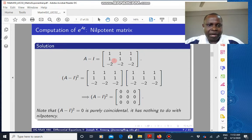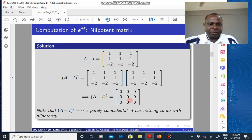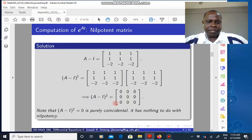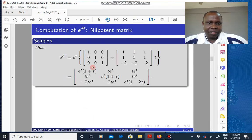So A minus I is this. A minus I squared is given by the product of this, which is just zero. This is purely coincidental. It's not because of nilpotency. And so we have A minus I squared, A minus I, put them back into the original equation there, this previous equation, and then you have an expression for the matrix exponential.